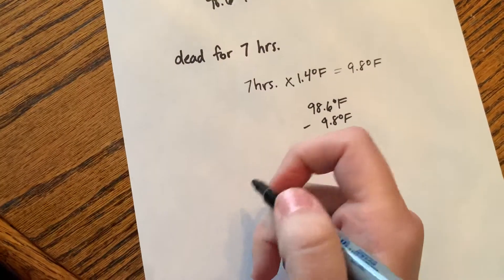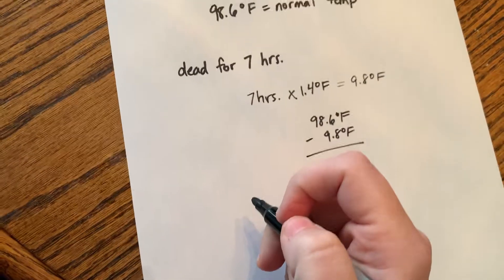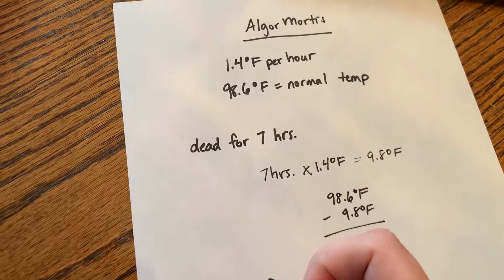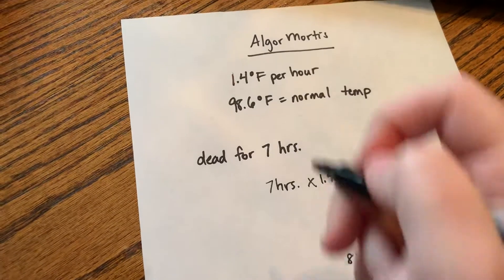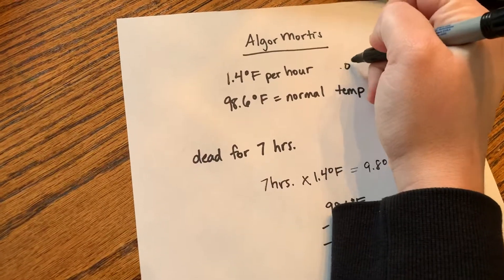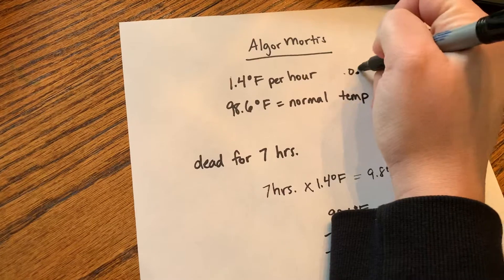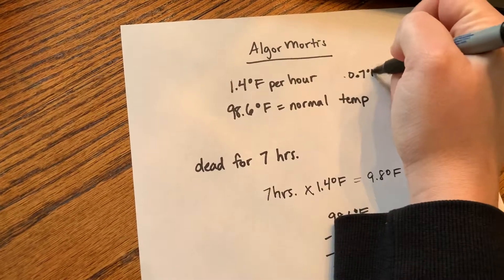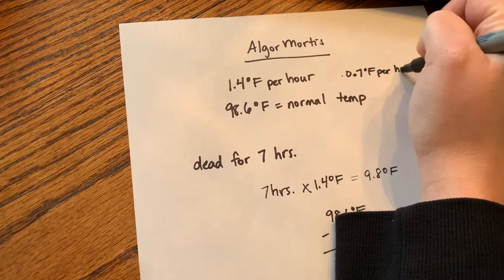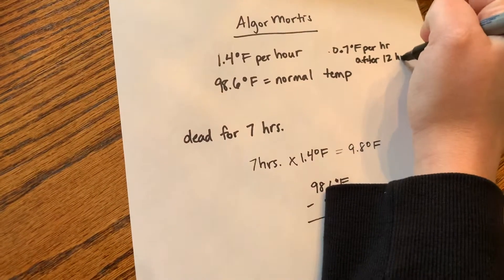And we can work this backwards as well. And of course after 12 hours, the body loses temperature at 0.7 degrees, I'll write that here, 0.7 degrees per hour after 12 hours.